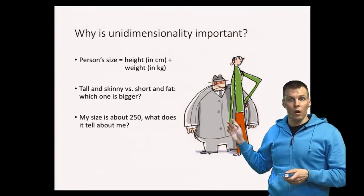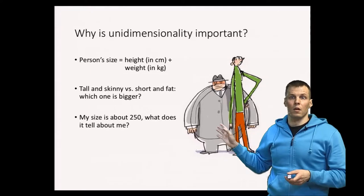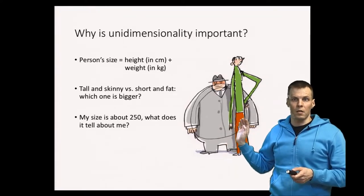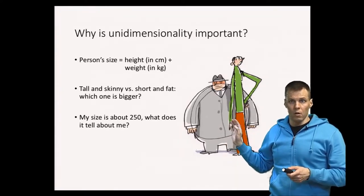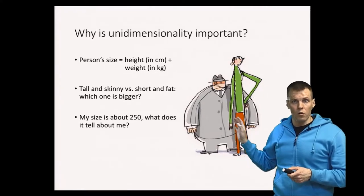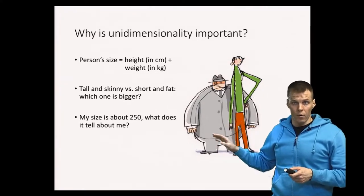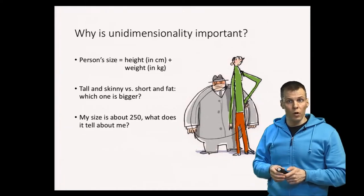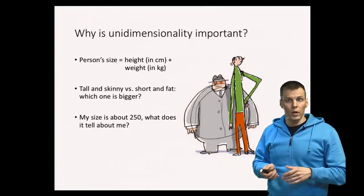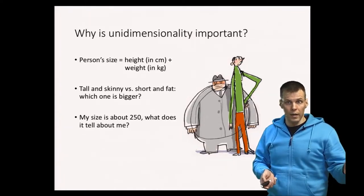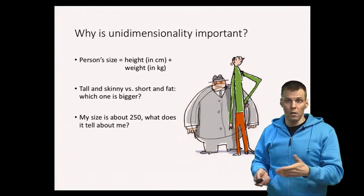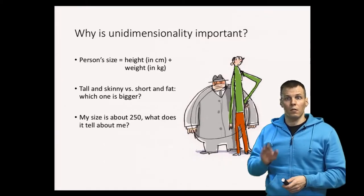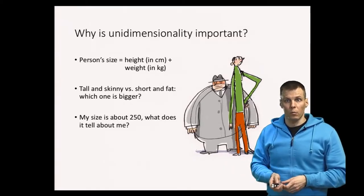The idea of a unidimensional scale is that we can summarize all relevant information about the construct being studied with one number. With person's size, we need at least two numbers — height and weight. We can also include shoe size and other measures, but height and weight are the two most important ones.